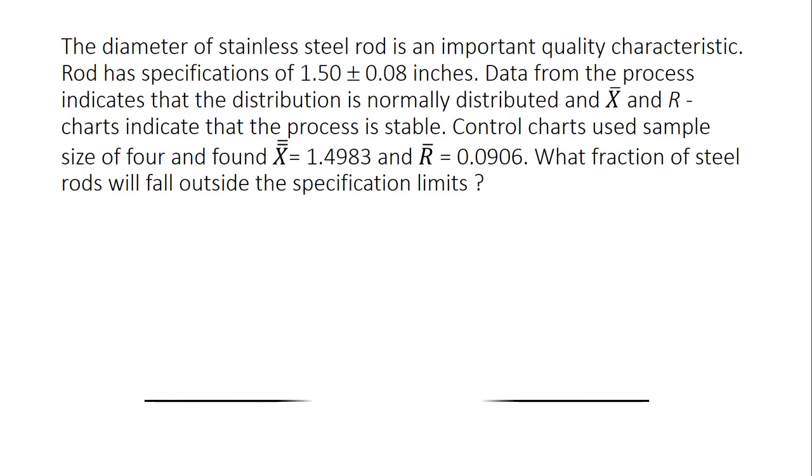We will use a number line. The center of the number line is 1.5, the lower specification limit is 1.42 and the upper specification limit is 1.58. We also know that X-double-bar is the process mean. X-double-bar which is 1.4983 will be somewhere nearby. And then we can draw a normal distribution curve with a mean of 1.4983 but we do not know the standard deviation here.